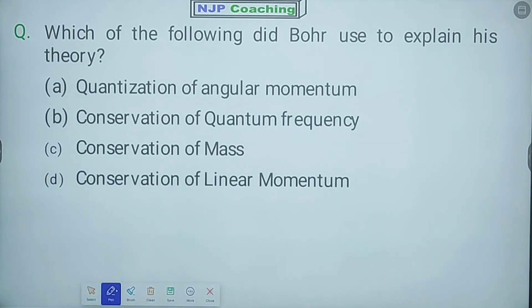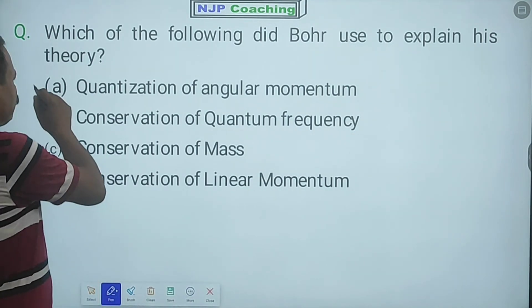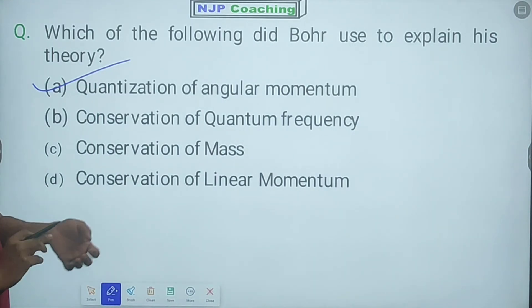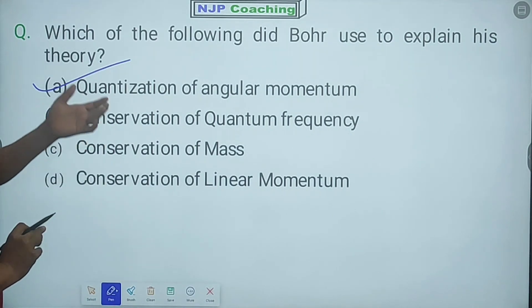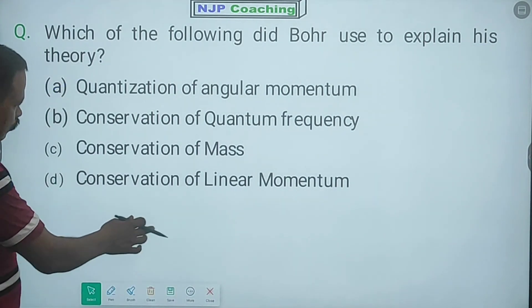Next question: Which of the following did Niels Bohr use to explain his theory? Quantization of angular momentum, conservation of quantum frequency, conservation of mass, or conservation of linear momentum? Option number A - quantization of angular momentum. Niels Bohr explained his theory using quantization of angular momentum. Option number A. Next.